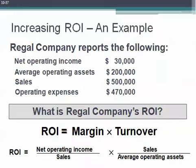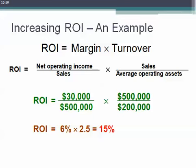Let's look at an example for the Regal Company. It reported net operating income of $30,000, average operating assets of $200,000, sales of $500,000, and operating expenses of $470,000. Our ROI is margin times turnover. Regal's profit margin is 6%, and its asset turnover is 2.5, so 6% times 2.5 gives us an ROI of 15%. We could also calculate that directly by taking net operating income of $30,000 and dividing by $200,000 of average operating assets.